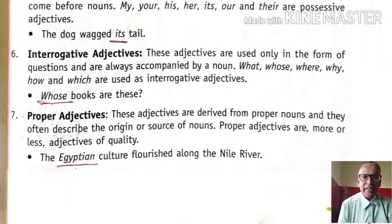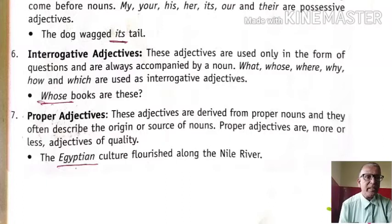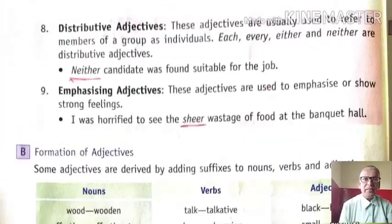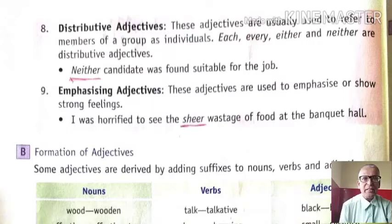Seven, proper adjectives. These adjectives are derived from proper nouns and they often describe the origin or source of nouns. Example: the Egyptian culture flourished along the Nile river — so from Egypt it has become Egyptian, from India it will become Indian. Next is distributive adjectives. These adjectives are usually used to refer to members of a group as individuals. Each, every, either, and neither are distributive adjectives.